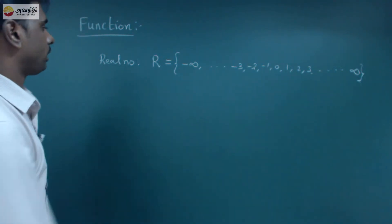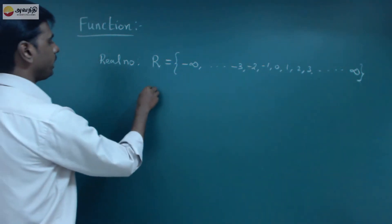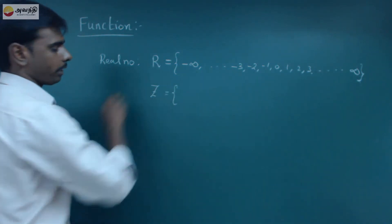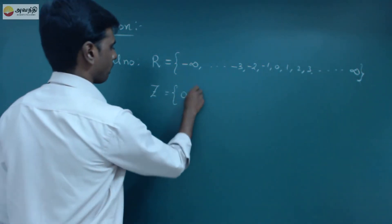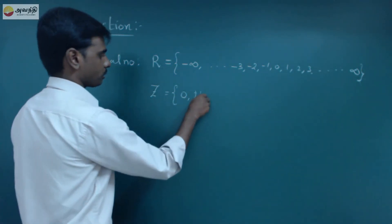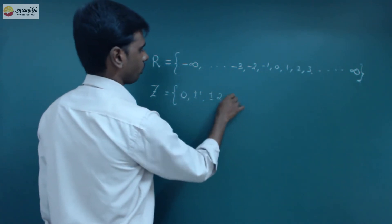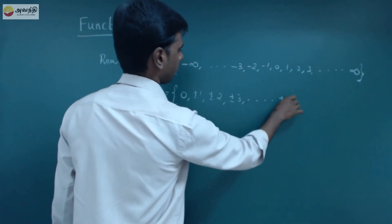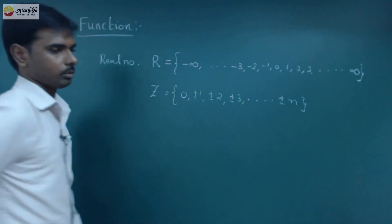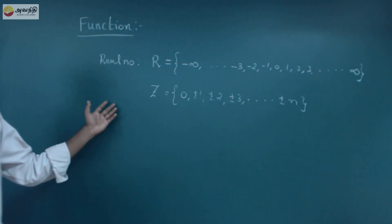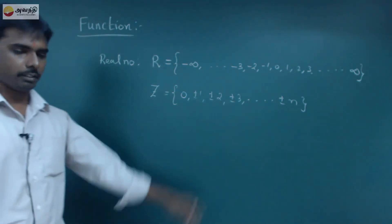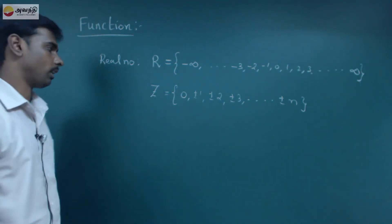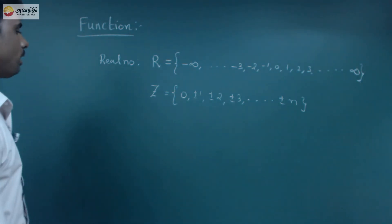Next, the set of all integers. Integers — what do we know? 0, plus or minus 1, plus or minus 2, plus or minus 3, ..., plus or minus n. So, setting the set, we define the integers.